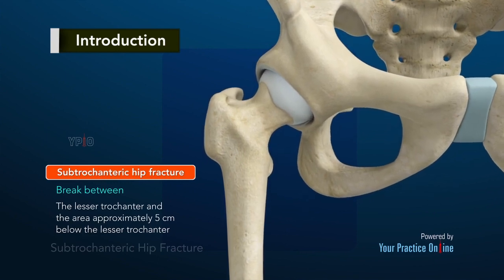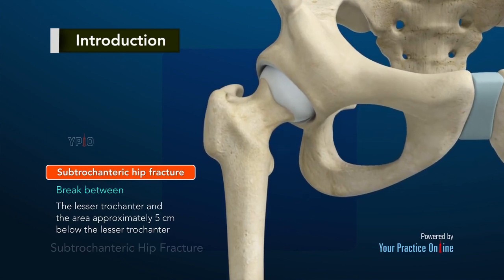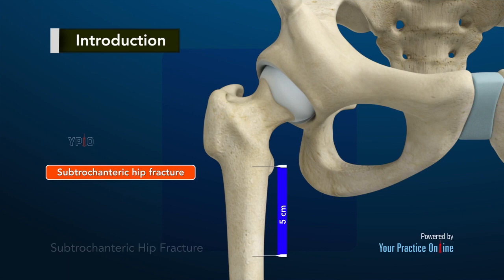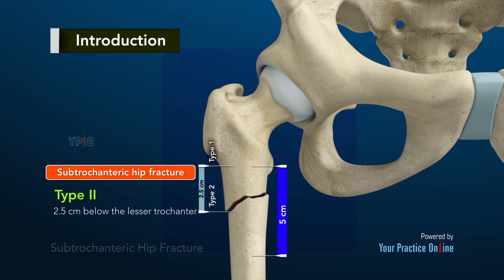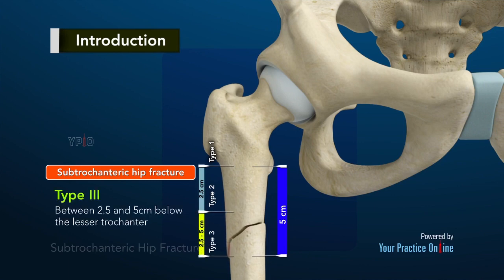Subtrochanteric hip fracture is a break between the lesser trochanter and the area approximately 5 centimeters below the lesser trochanter. The fracture can be classified based on its location. Type 1 occurs at the level of the lesser trochanter. Type 2 occurs within 2.5 centimeters below the lesser trochanter, and Type 3 occurs between 2.5 and 5 centimeters below the lesser trochanter.